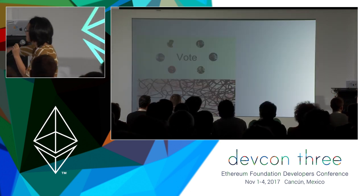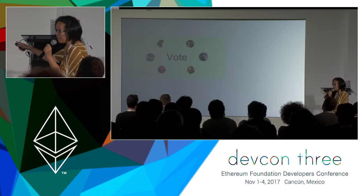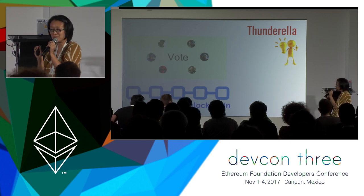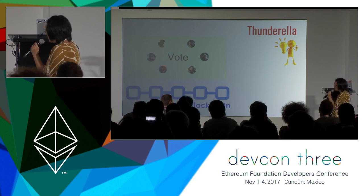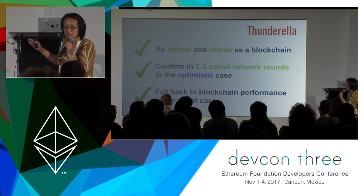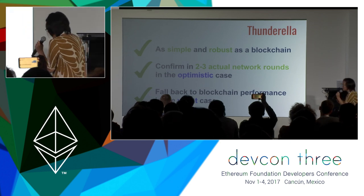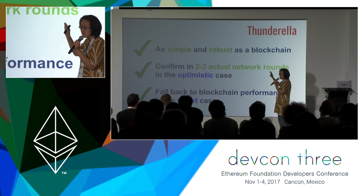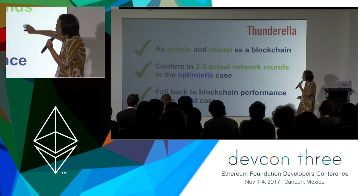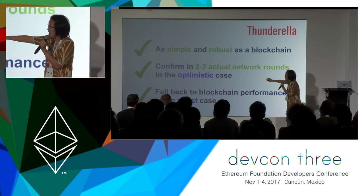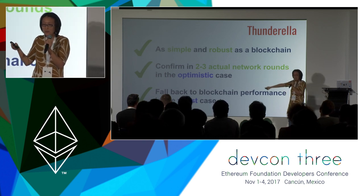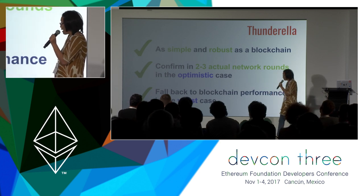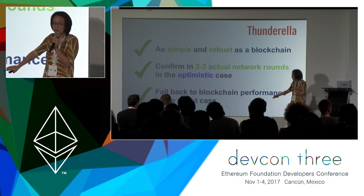Our idea: we still have the very simple voting path, but we remove the complicated stuff and replace it with the blockchain. That's the idea behind Thunderella. We are a blockchain-based protocol, which is why we are almost as simple and just as robust as the blockchain itself. 95% of the time in practice you are going to live in the fast path — also called the optimistic path — where you confirm transactions with a single round of voting: two to three actual network rounds. When you're under attack, you fall back to the blockchain's performance and guarantees.